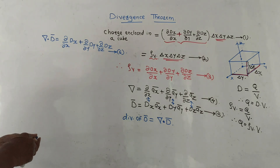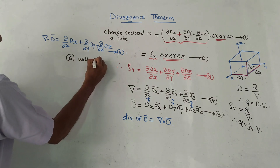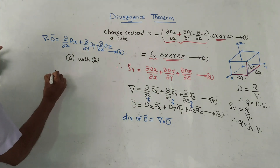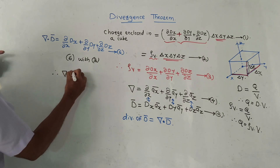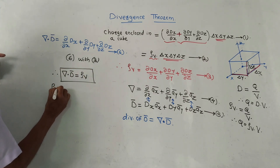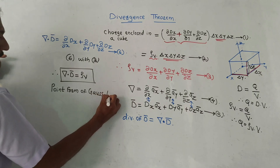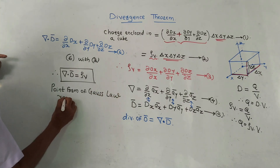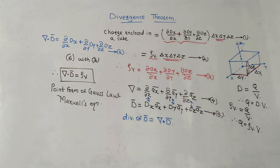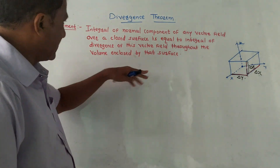Equation number six gives the divergence of D-bar. Comparing equation six with equation three, the right-hand sides are the same, so the left-hand sides must also be equal. Therefore: del · D-bar = ρv. This is a very important relation. It is called the point form of Gauss Law, and it is one of Maxwell's equations.